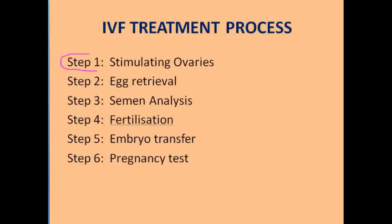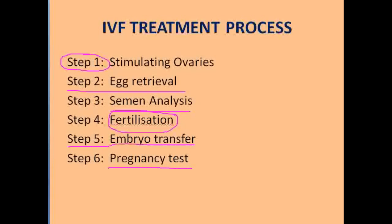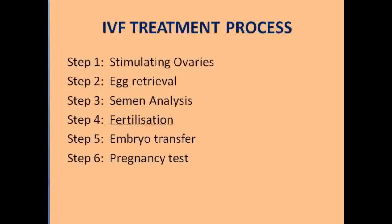Step 1: Stimulating ovaries. Step 2: Egg retrieval. Step 3: Semen analysis. Step 4: Fertilization. Step 5: After fertilization, the embryo must be transferred. Step 6: A pregnancy test is conducted to determine whether the lady is pregnant. By these six steps, we complete the IVF process.